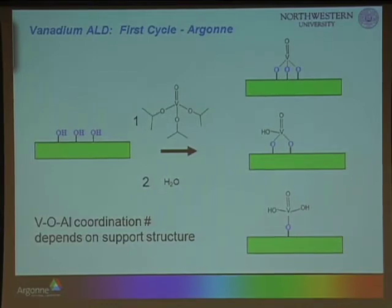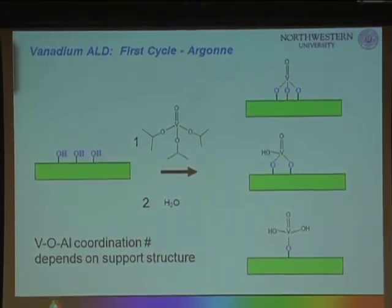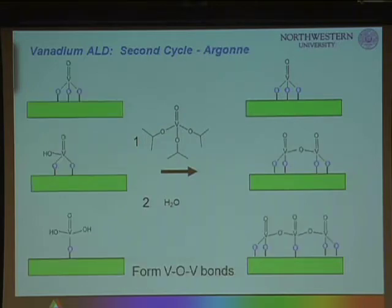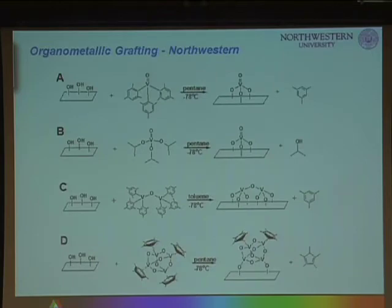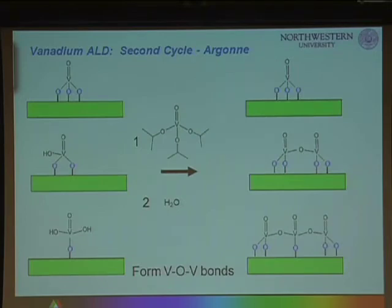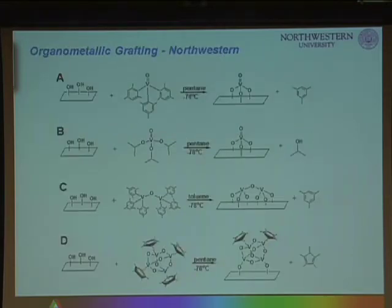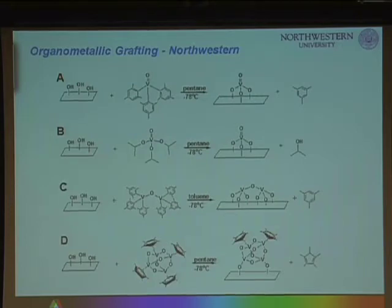We make use of the technique of atomic layer deposition. By doing one cycle of this, we make monomer species. If we do a second cycle, we can make polymers, and we can make them as large as we want by doing sequential cycles. We learned this through interaction with Jeff Elam at Argonne. Alternatively, I can make the molecular assembly ahead of time and then attach it to the surface — this work is done in collaboration with Tobin Marks, where molecular synthesis comes into play. There are significant differences in the details of what you get depending on how you make it.